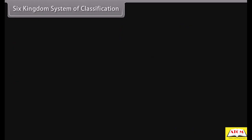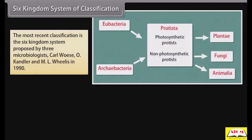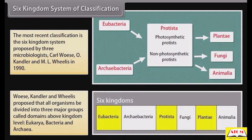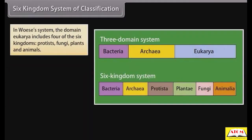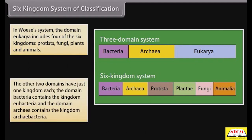Six Kingdoms System of Classification: The most recent classification is the Six Kingdom System, proposed by three microbiologists — Carl Woese, O. Candler, and Emil Willis in 1990. They proposed that all organisms be divided into three major groups called domains, above kingdom level: Eukarya, Bacteria, and Archaea. In their system, the domain Eukarya includes four of the six kingdoms: Protists, Fungi, Plants, and Animals. The domain Bacteria contains the kingdom Eubacteria, and the domain Archaea contains the kingdom Archaeabacteria.